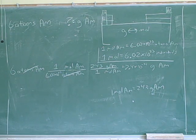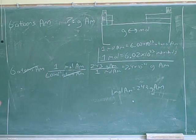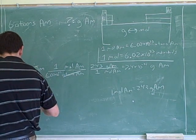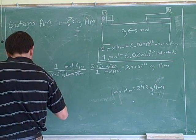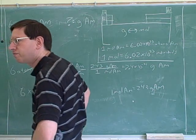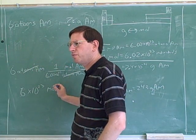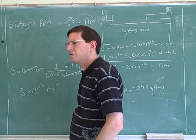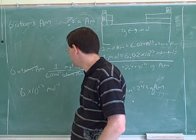The way they wrote that is kind of weird. They wrote it as 6 times 10 to the 23rd moles to the negative 1. Do you know what this exponent negative 1 means? Do you know what it means if something has a negative 1 exponent?